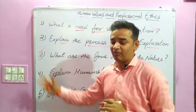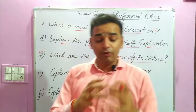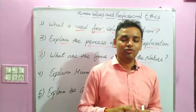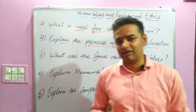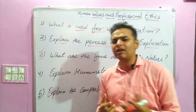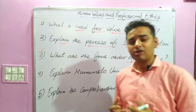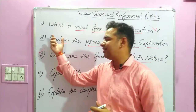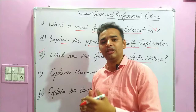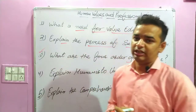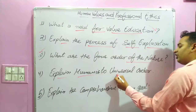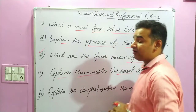If you understand all five questions before entering the examination hall, you must pass and score more than 50 percent, because these are the five questions that dominate the Human Values and Professional Ethics subject, depending on your course and university. The next question is: Explain the humanistic universal order.